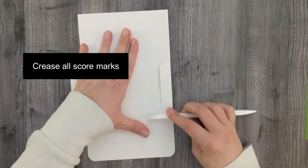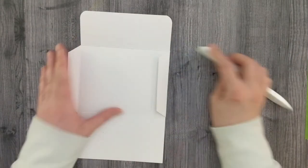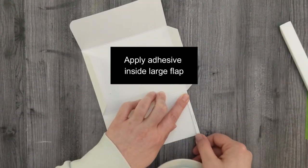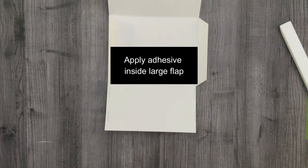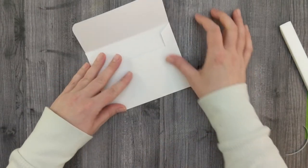Crease all of the score marks, and apply adhesive to the larger flap on the inside, on the bottom of the envelope.